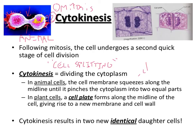In plant cells, cytokinesis is different because the cell wall resists pinching. Instead, plant cells form a cell plate — basically building a new wall in the middle of the cell. Whereas animal cells pinch into two, plant cells lay down a new wall right down the middle, and once it meets on either end you have two totally separate cells.